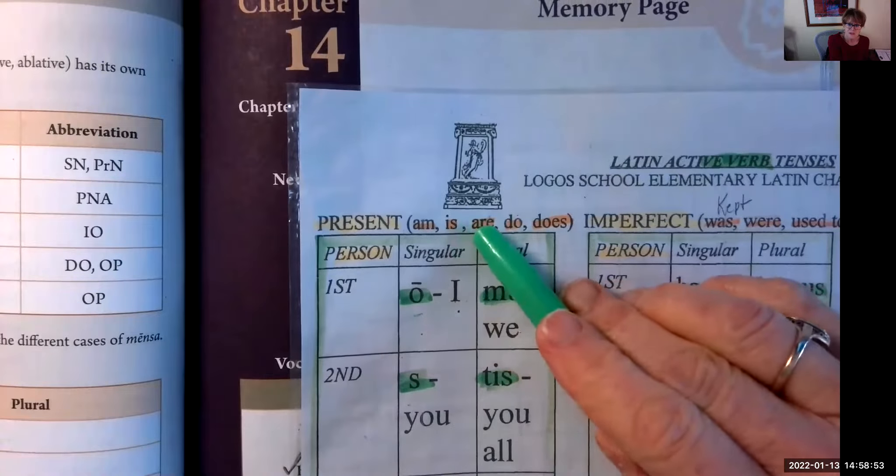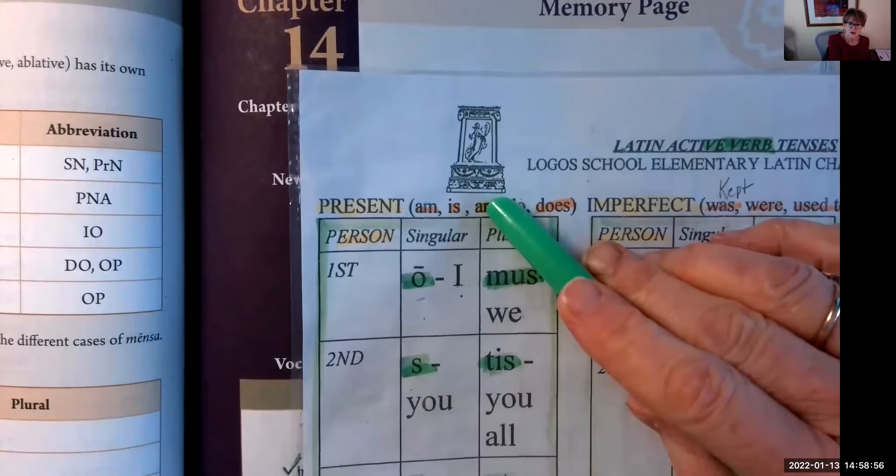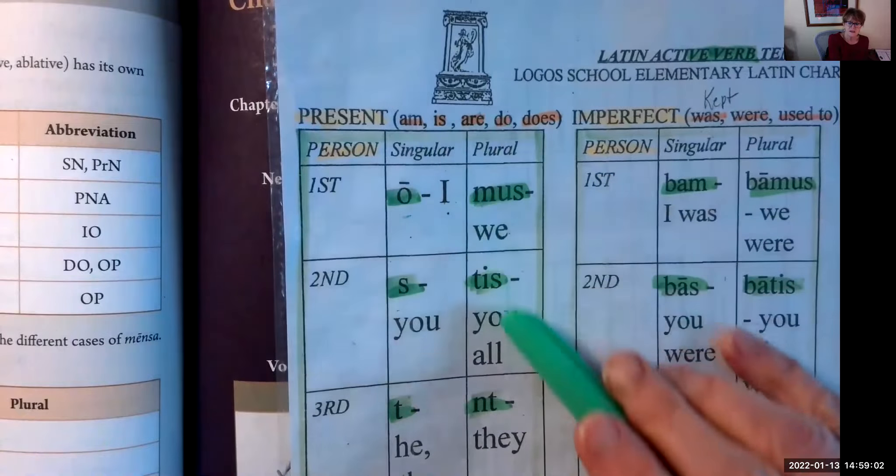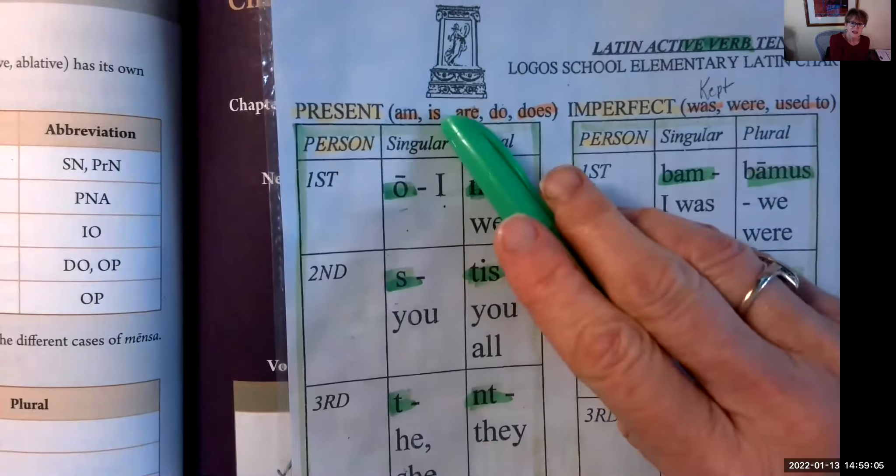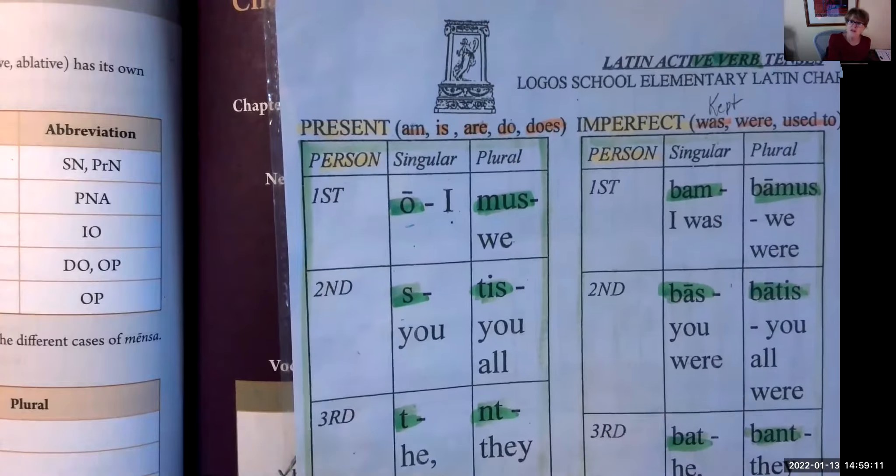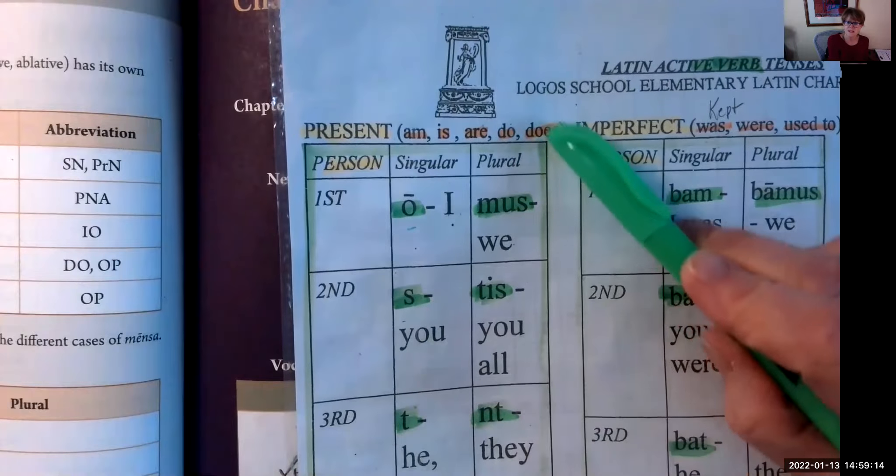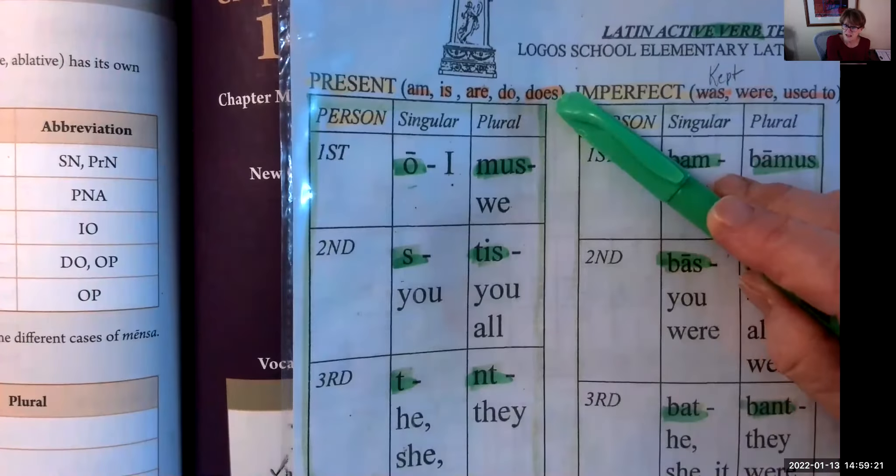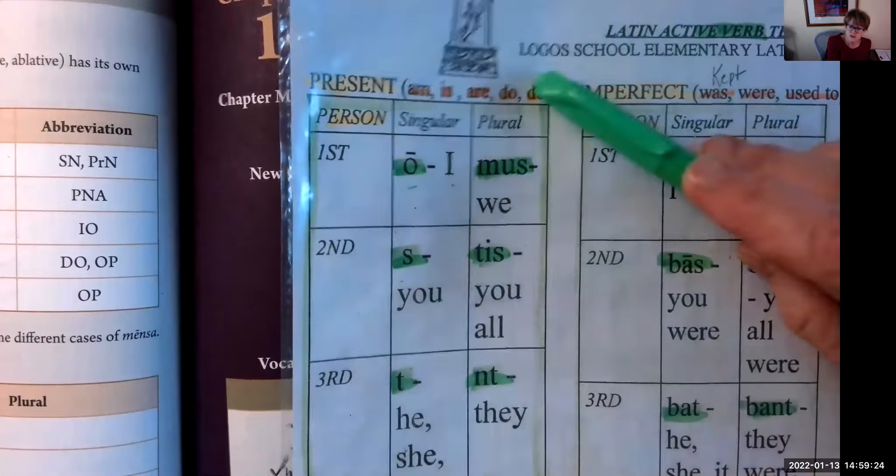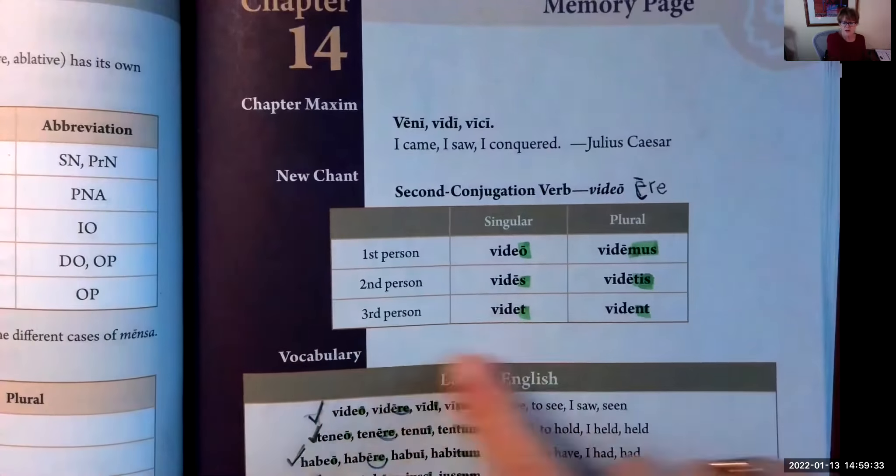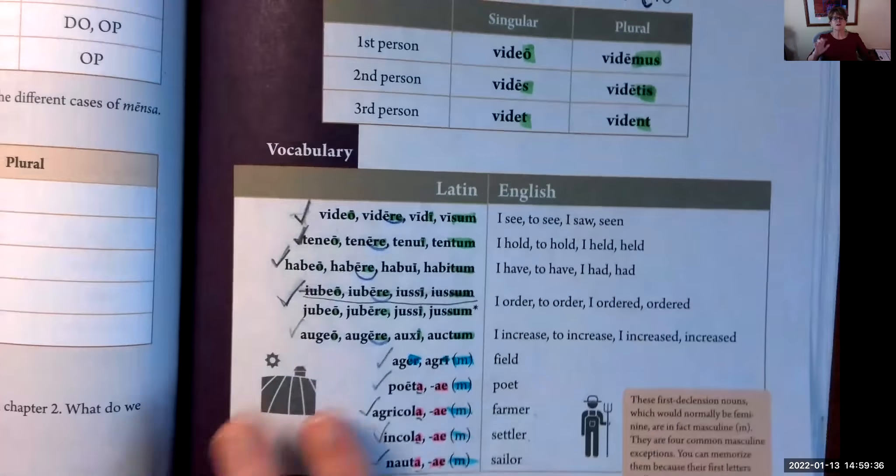The subject pronoun actually goes on the end of the verb, on the stem. I see, you see, he/she/it sees, we see, you all see, they see. There is another way to translate: I am seeing, you are seeing, he/she/it is seeing, we are seeing, you all are seeing, and they are seeing. That's the progressive. There's a third way to translate in the present tense: I do see, you do see, he/she/it does see, we do see, you all do see, they do see. This is called the emphatic.